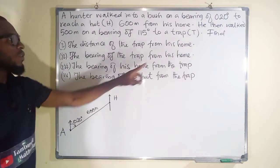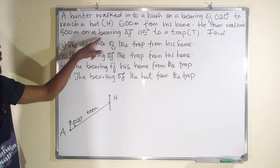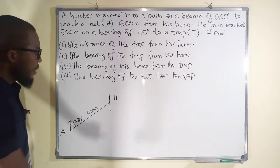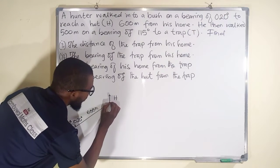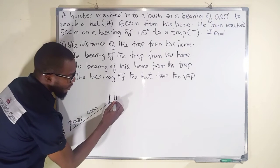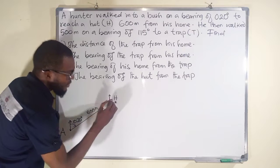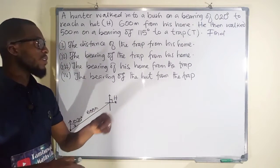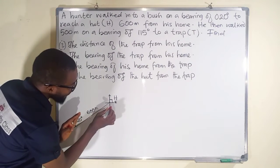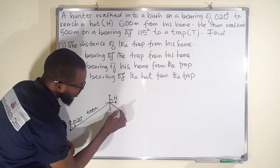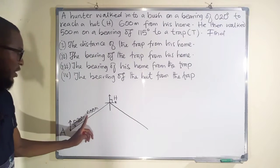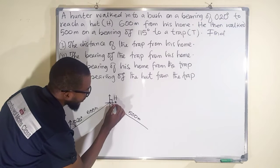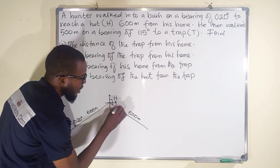From the hut, he walked 500 meters on a bearing of 115 degrees, so we construct 115 degrees at H. From north to east is 90 degrees, and what remains to make 115 is 25 degrees. So we have 25 degrees past east, and this line is shorter since 500 is less than 600 meters.